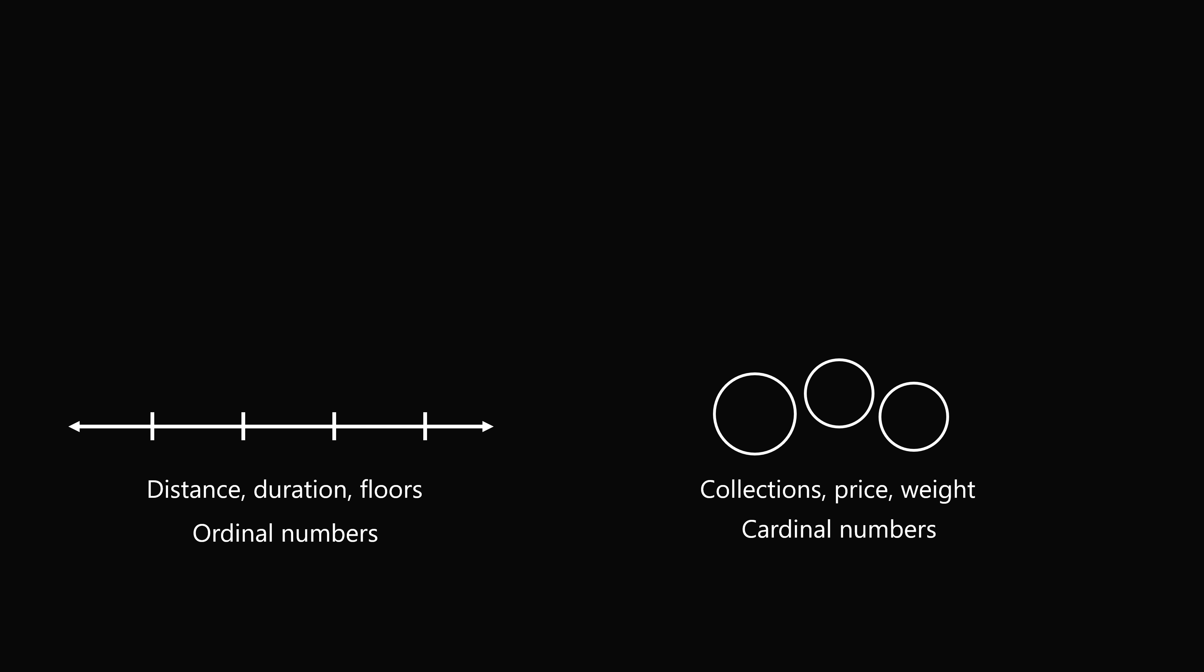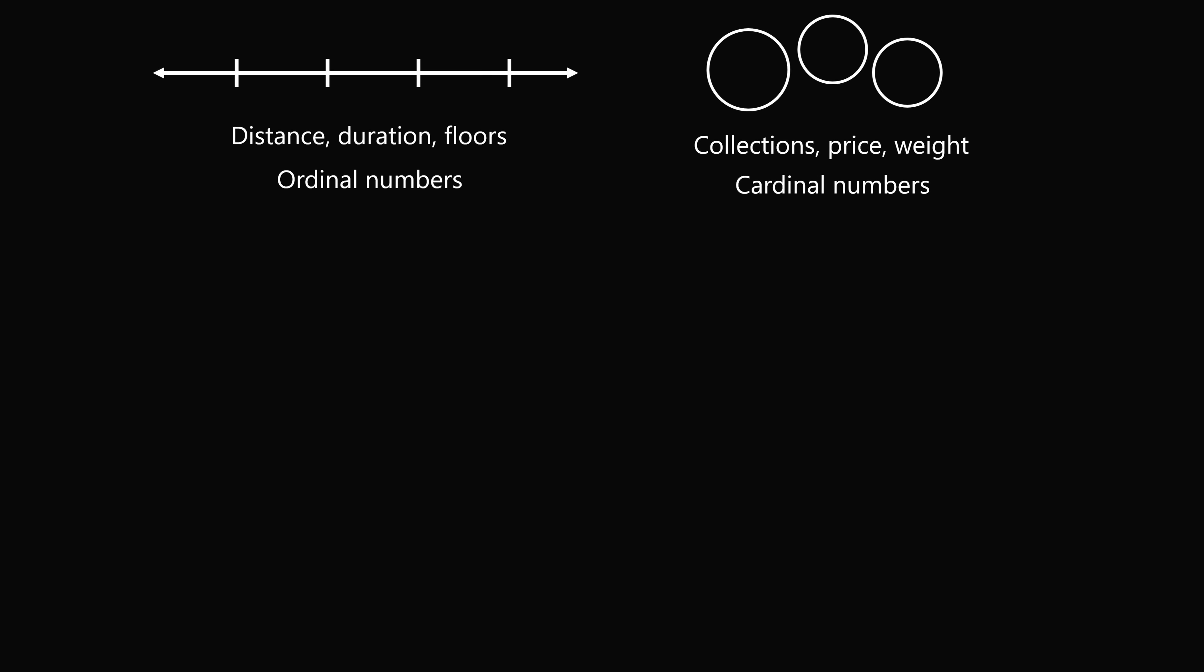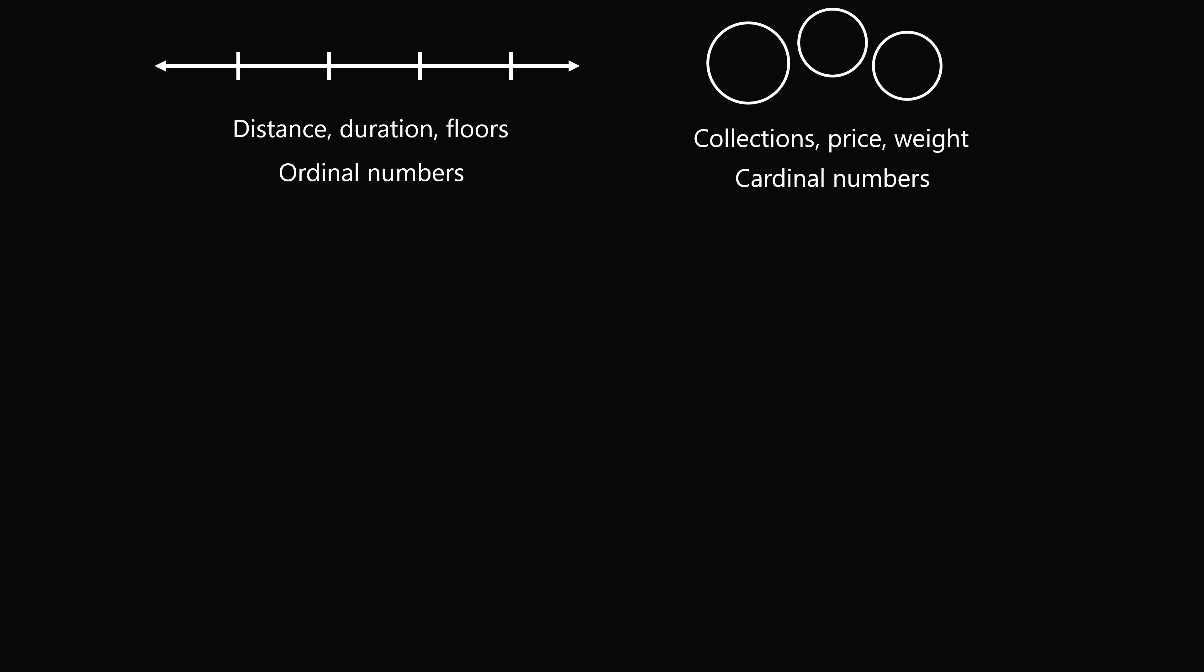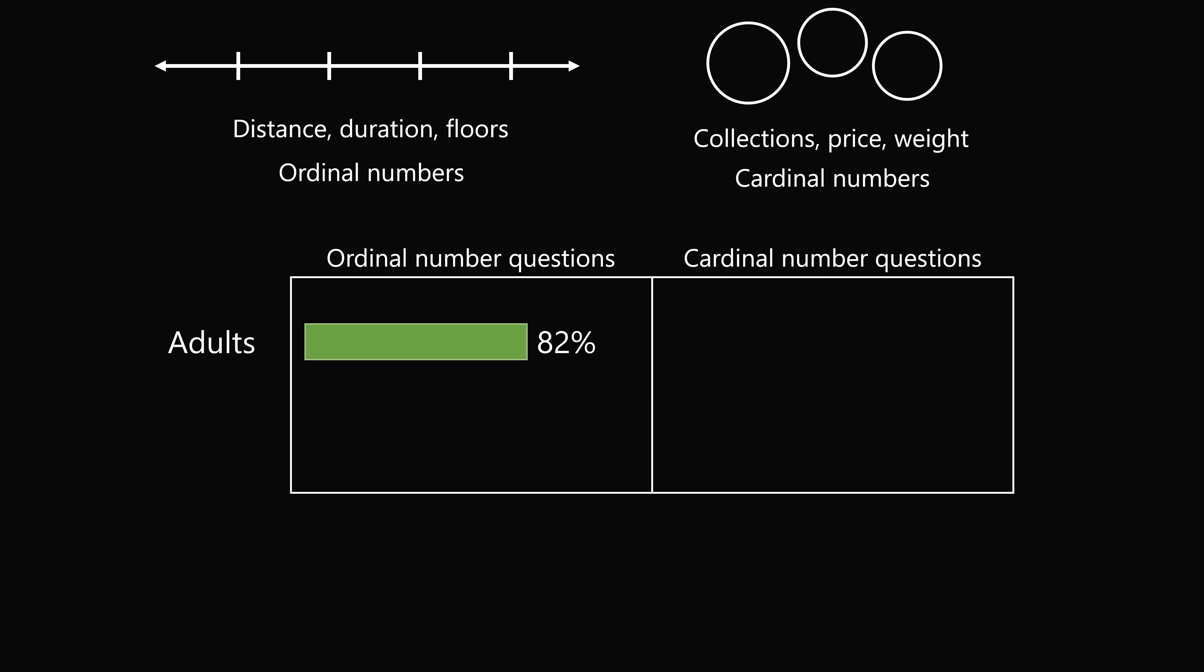So what the authors of the study found is there was a difference in how the participants responded for the two types of numbers. For the questions that involved ordinal numbers, the adults were able to solve 82% of the questions correctly. For the cardinal numbers, however, they only solved 47% of the questions correctly. They found these to be much harder, and they took longer to solve them.